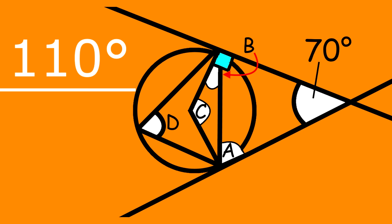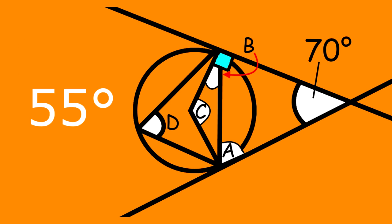Finally, we divide that 110 by 2 to give us 55 degrees. This is the angle marked D. Congratulations if this was your answer.